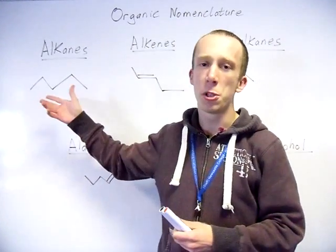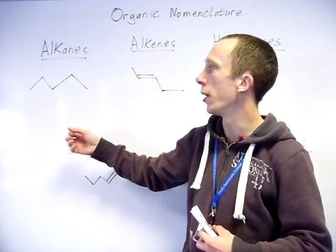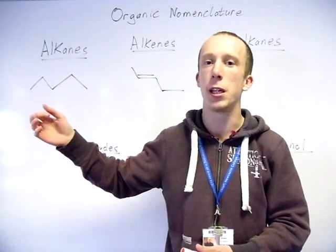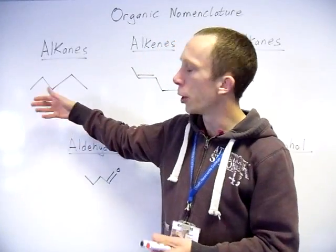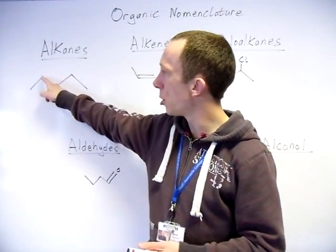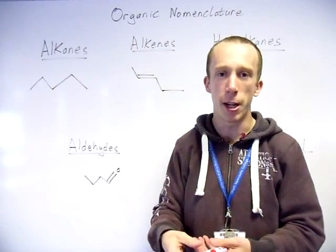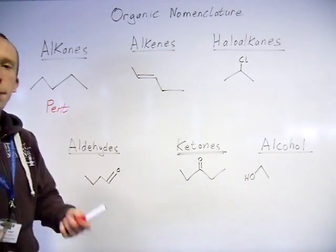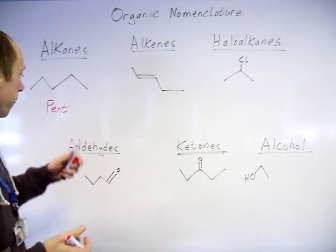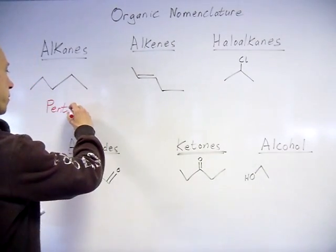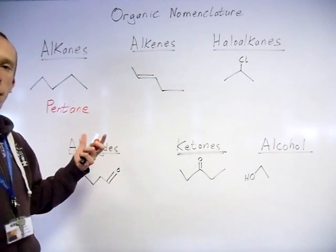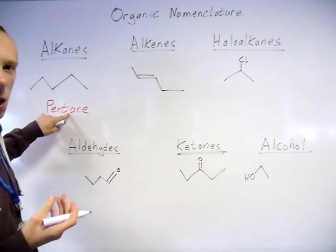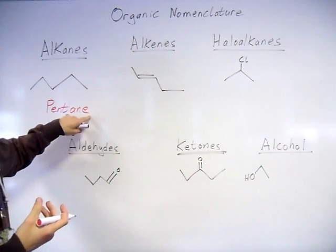So starting here, I'm going to be using the skeletal form as well by the way, just saves me time actually drawing it out. If you're not used to the skeletal, then practice drawing this out for yourself in terms of the display. So we're going to look at the amount of carbons first, so one, two, three, four, five carbons there. Five, as I said, was pent. And because it's an alkane, then the end of this will be 'ane' to signify that.